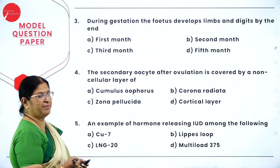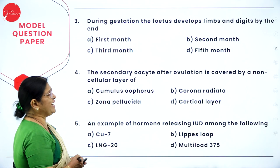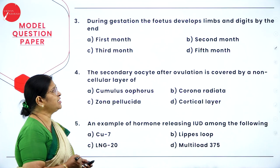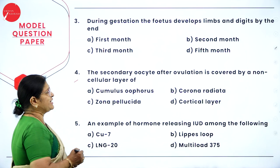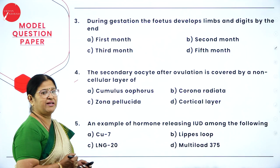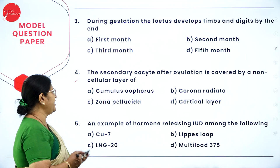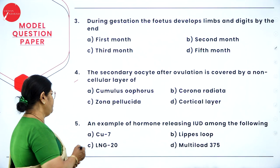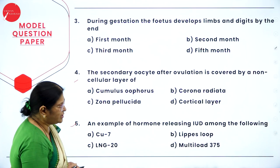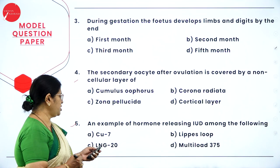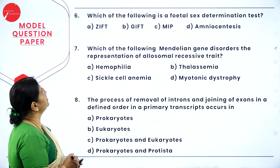Question 3: during gestation, the fetus develops limbs and digits by the end of — Option A: first month; B: second month; C: third month; D: fifth month. Question 4: the secondary oocyte after ovulation is covered by a non-cellular layer of — Option A: cumulus oophorus; B: corona radiata; C: zona pellucida; D: cortical layer. Question 5: an example of hormone-releasing IUD is — Option A: Cu7; B: Lippes loop; C: LNG-20; D: Multiload 375.